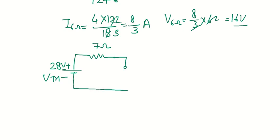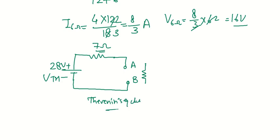Since RL is not mentioned, we keep the circuit open at terminals A and B. If an RL value were given, it would be connected across A and B. The final Thevenin equivalent circuit has RTH = 7 ohm and VTH = 28 volt in series, with RL to be connected at terminals A and B.